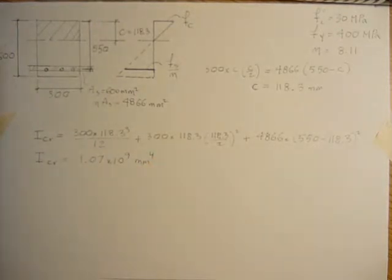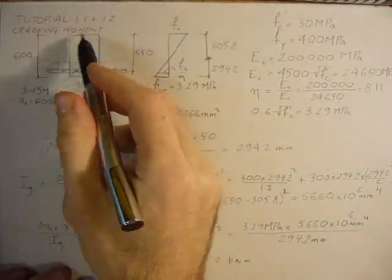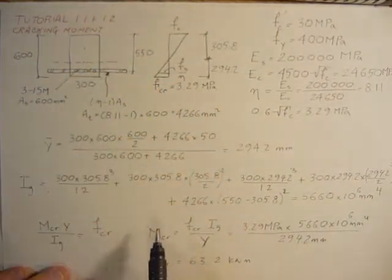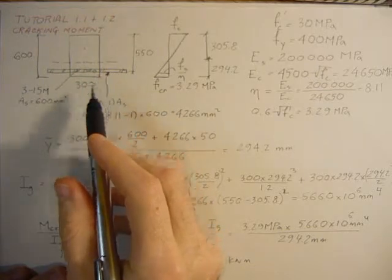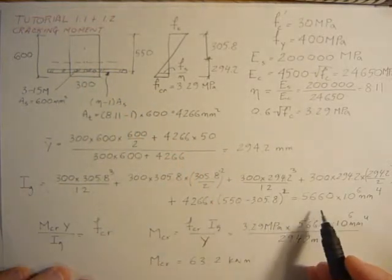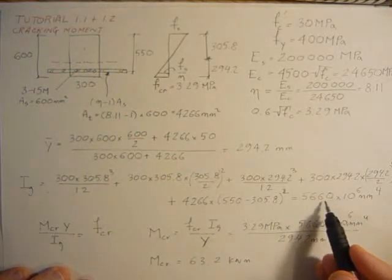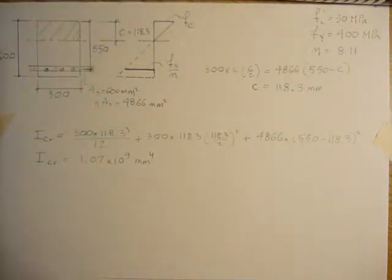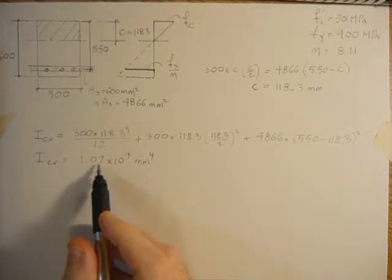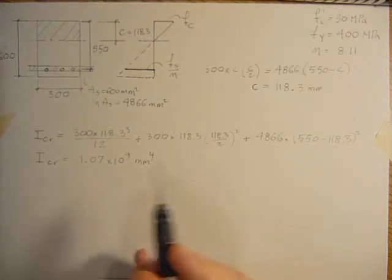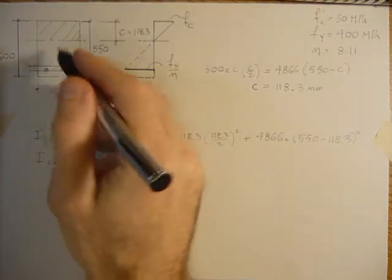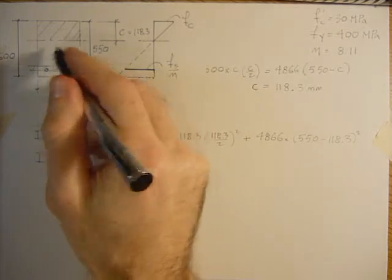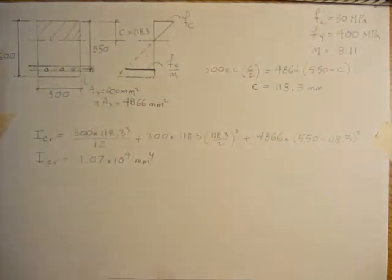So let's compare it to the gross moment of inertia when we assume the whole section was effective and the transformed steel was also effective. We had a gross inertia of 5.6 to the 9th, and now when it's cracked it reduces to 1.07 to the 9th. Less area, so less area of concrete available, so lower inertia.